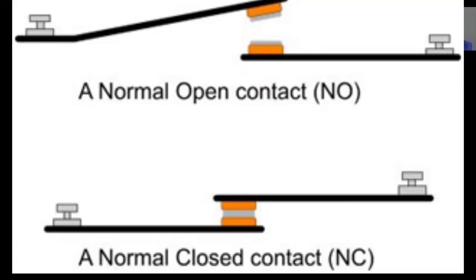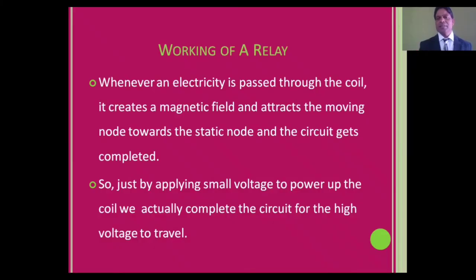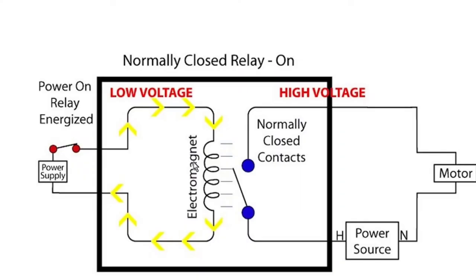When we pass any current through the coil, it creates a magnetic field and that magnetic field attracts the moving contacts.